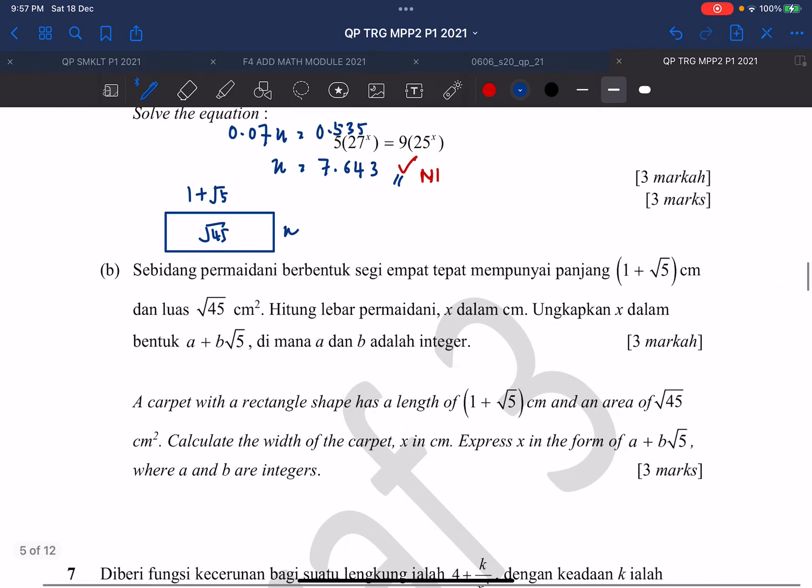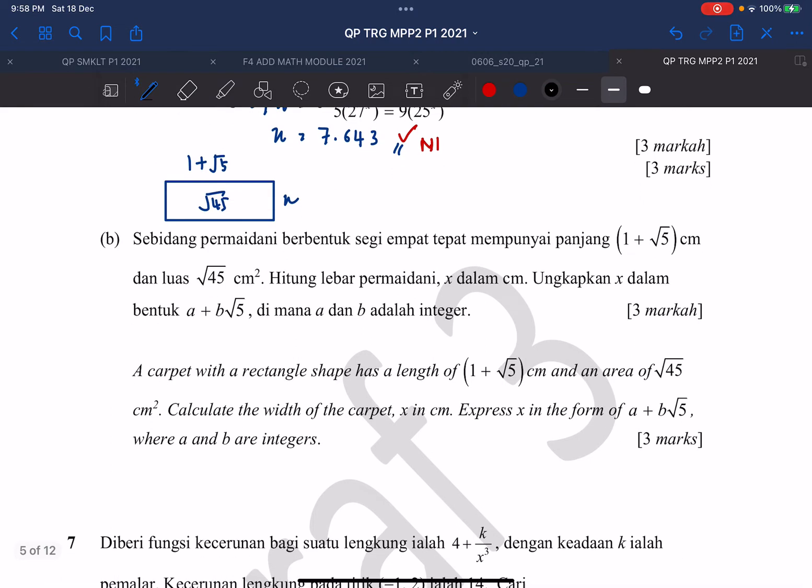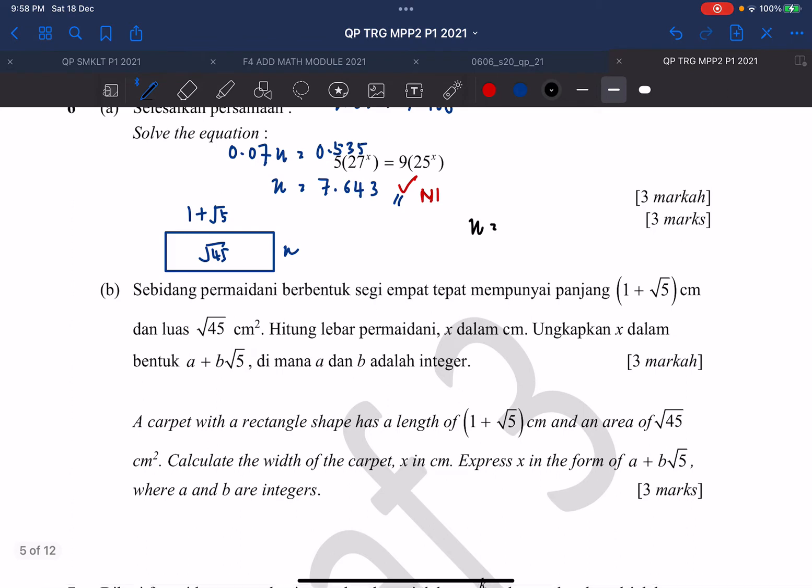So in this case, to find my x, which is my width, I use my area root 45 divided by my length, 1 plus root 5.